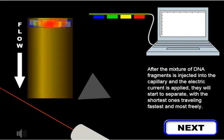After the mixture of DNA fragments is injected into the capillary and the electric current is applied, they will start to separate, with the shortest ones traveling fastest and most freely.